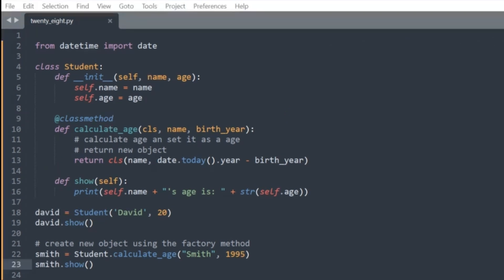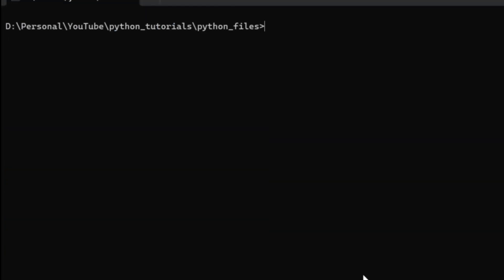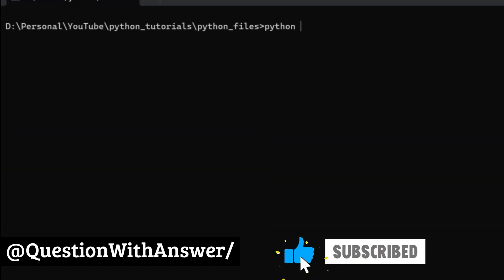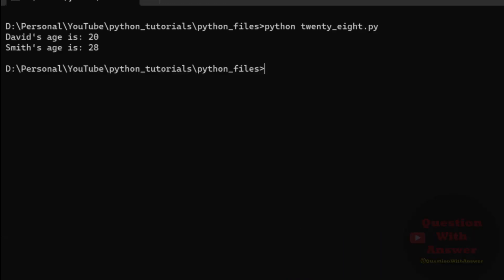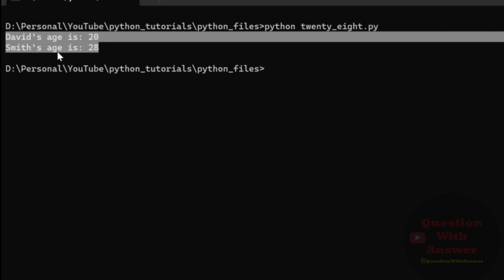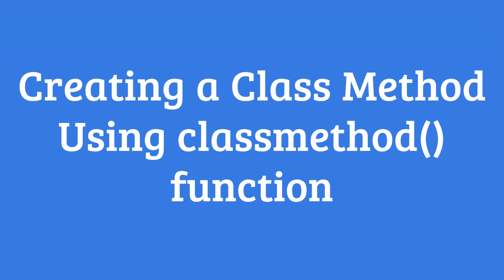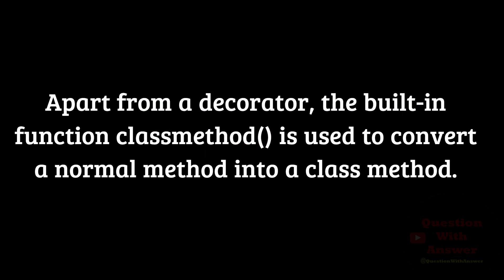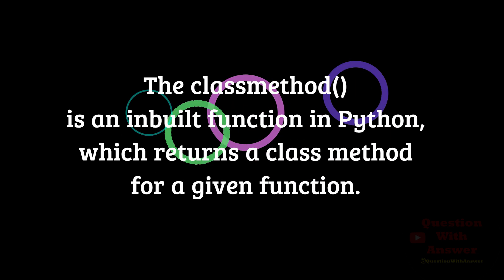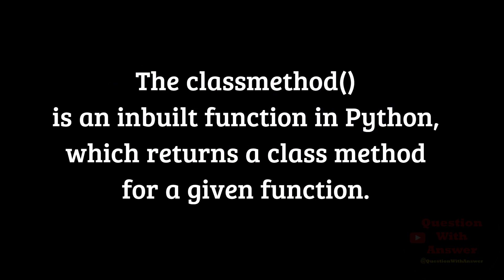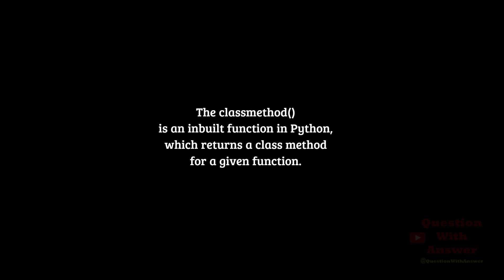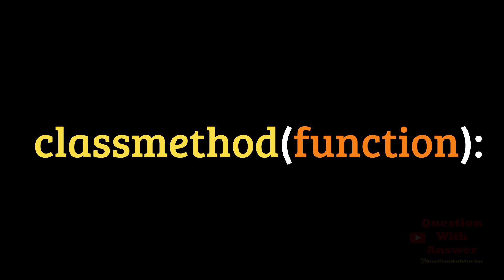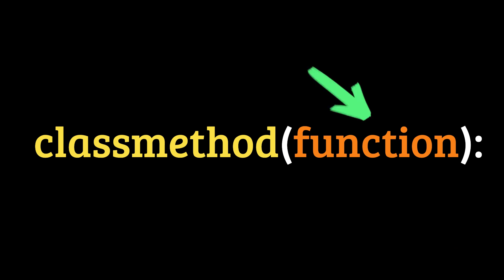Now let's run this Python file to see the result. Open your command prompt and run the Python file using python 20_8.py — you'll see the same result as shown on the screen. Apart from a decorator, the built-in classmethod() function can also be used to convert a normal method into a class method. It is an inbuilt function in Python which returns a class method for a given function. The function parameter is the name of the method you want to convert, and it returns the converted class method.